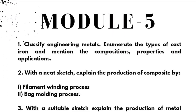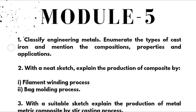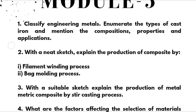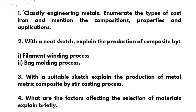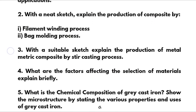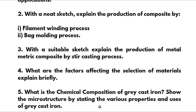Next, Module 5. First: classify engineering metals and enumerate the types of cast iron, mentioning compositions, properties, and applications. Second: with a neat sketch, explain the production of composites by filament winding process and bag molding process. Third: with a suitable sketch, explain the production of metal matrix composite by stir casting process.